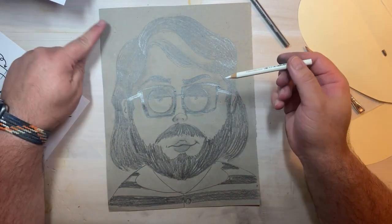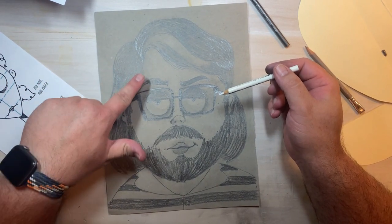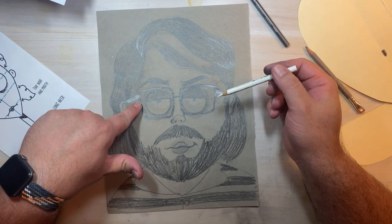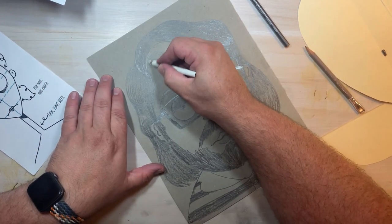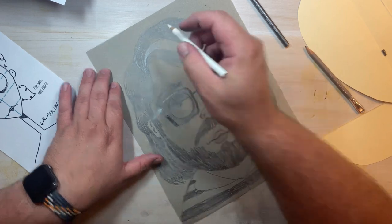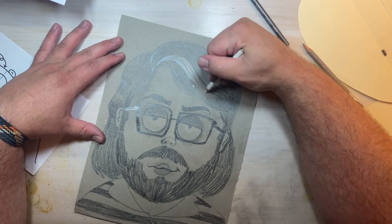Now we're going to turn our attention to the highlights and lighter areas of our work. Areas like our forehead, the whites of our eyes, maybe cheeks, the nose, some lips. Those are going to be used with a white china marker or white colored pencil.